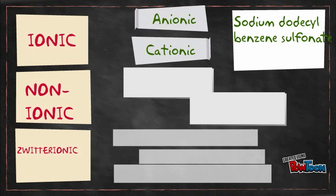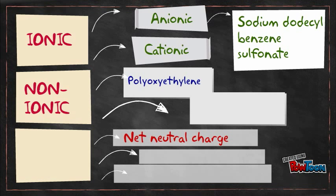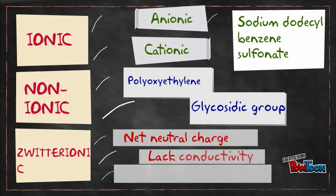Non-ionic detergent has an uncharged hydrophilic head group, which could be a polyoxyethylene or glycosidic group. Zwitterionic detergents have no net charge and poor conductivity. They have combined properties of both ionic and non-ionic detergent, thus making them efficient in breaking protein-protein interactions.